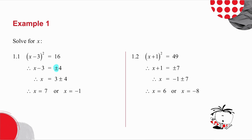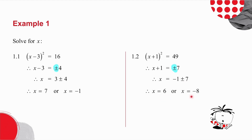The second example is exactly the same. x plus 1, all squared, equals 49. When you take the square root on both sides, do not forget it's plus or minus 7. So x equals minus 1 plus or minus 7, giving minus 1 plus 7 or minus 1 minus 7.